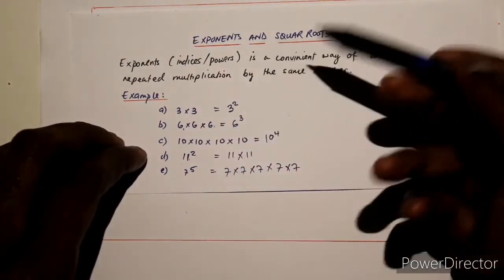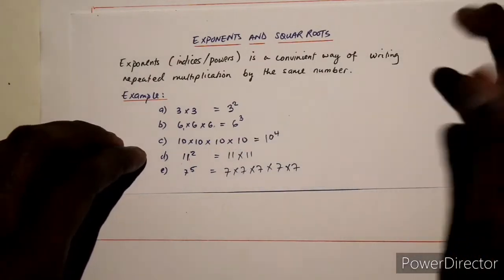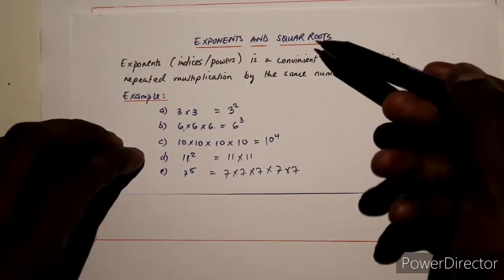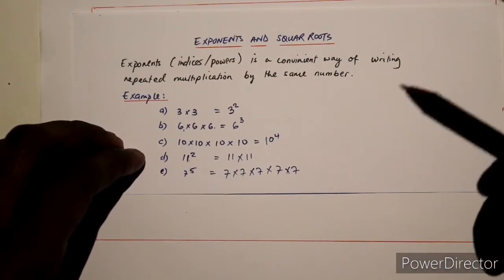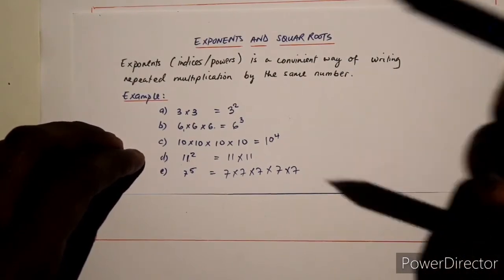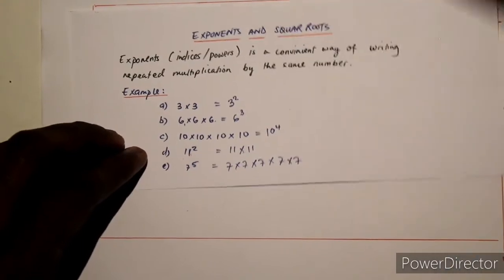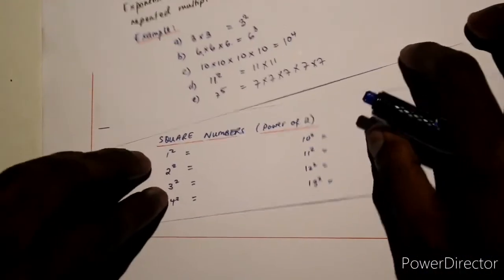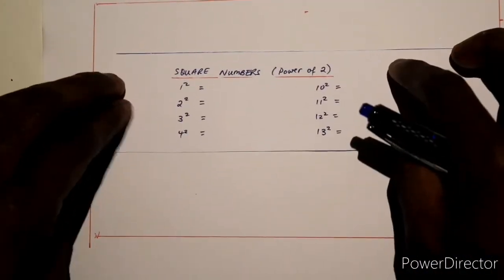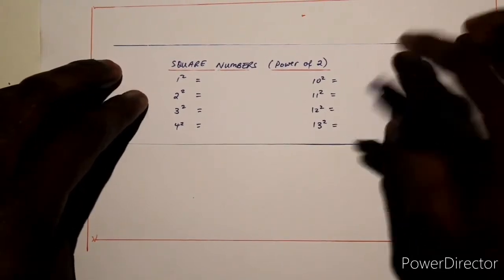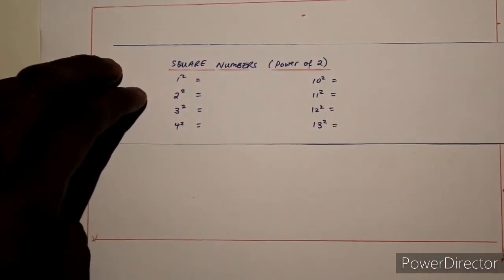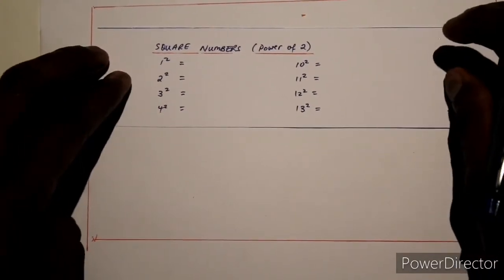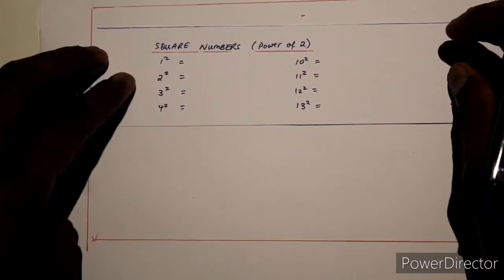Just to explain what an exponent is, we are looking at this. Before we go into square roots, it's very important that you understand what is known as square numbers. When dealing with square numbers, you are dealing with the power of 2. When you understand square numbers, then you will understand square roots.